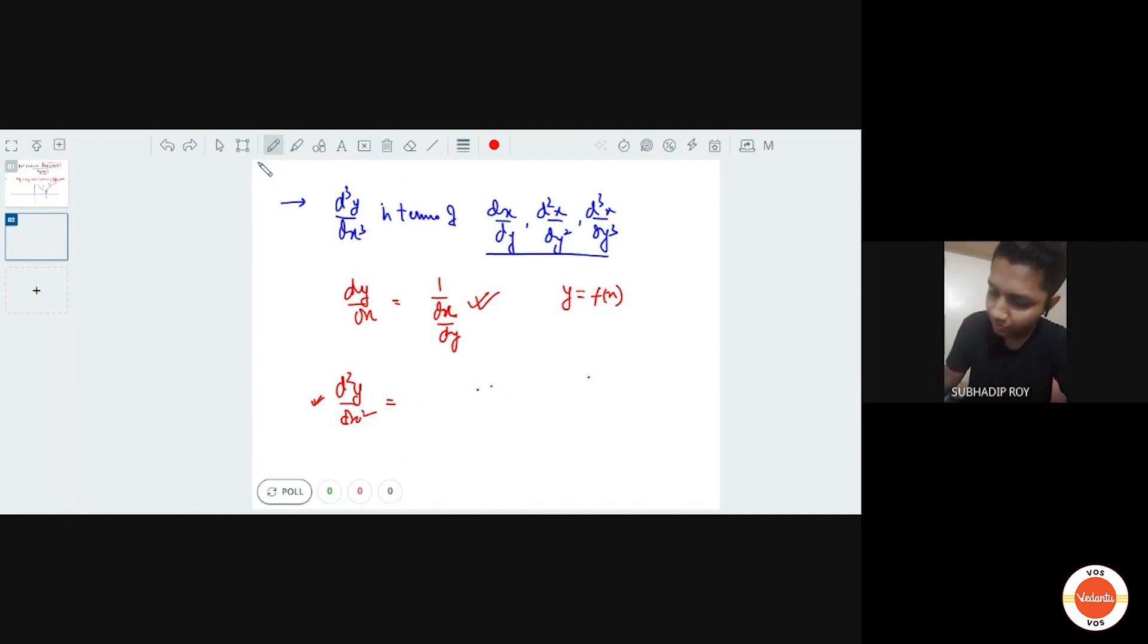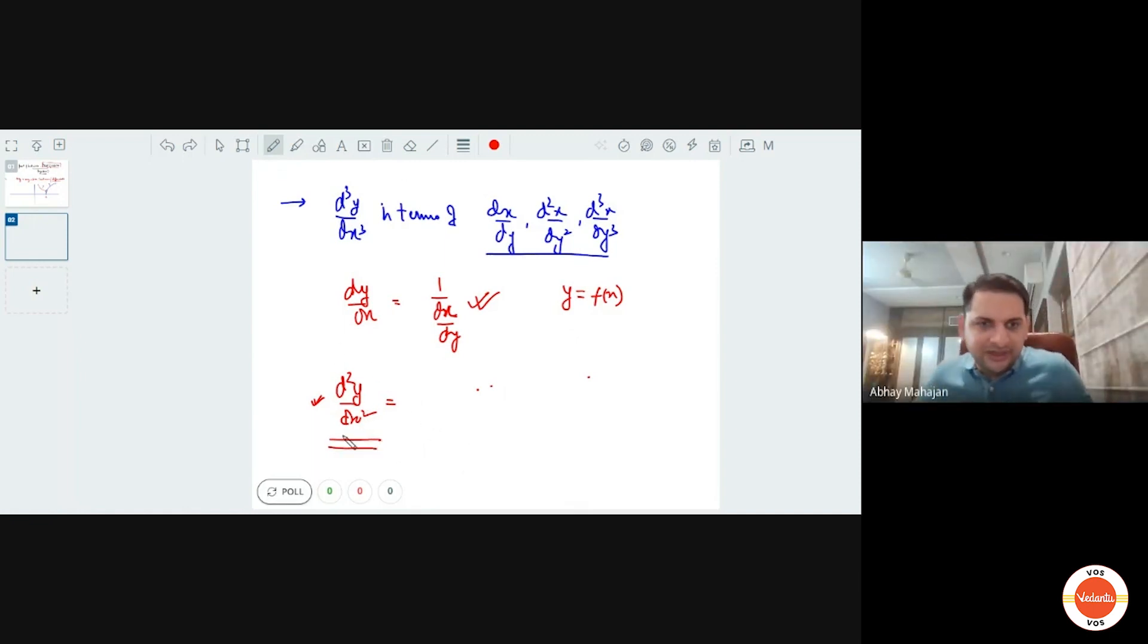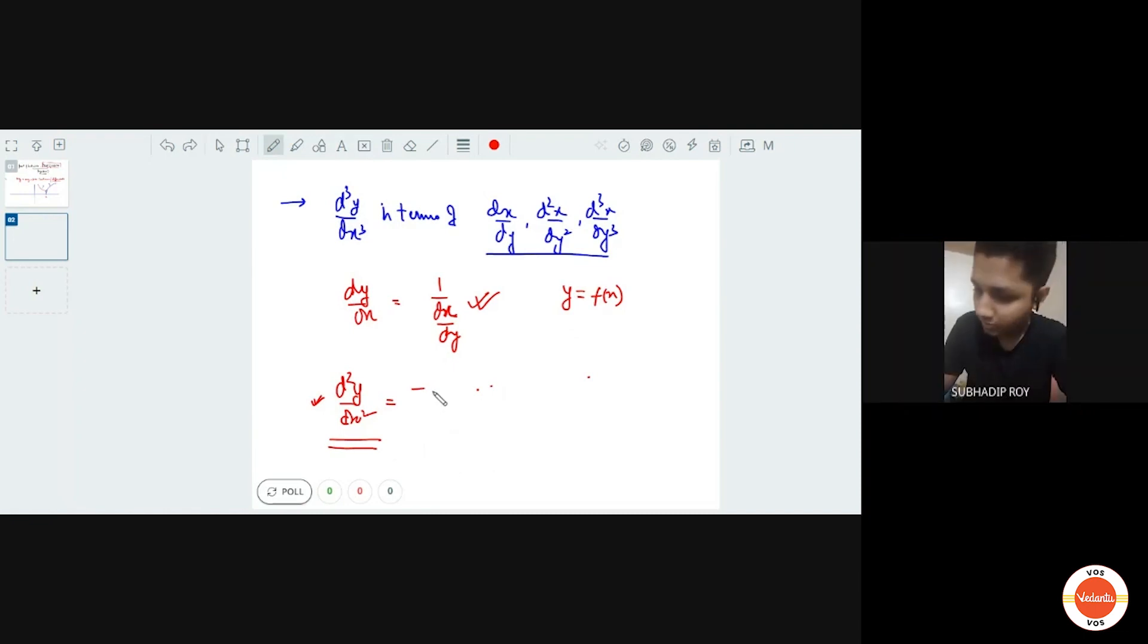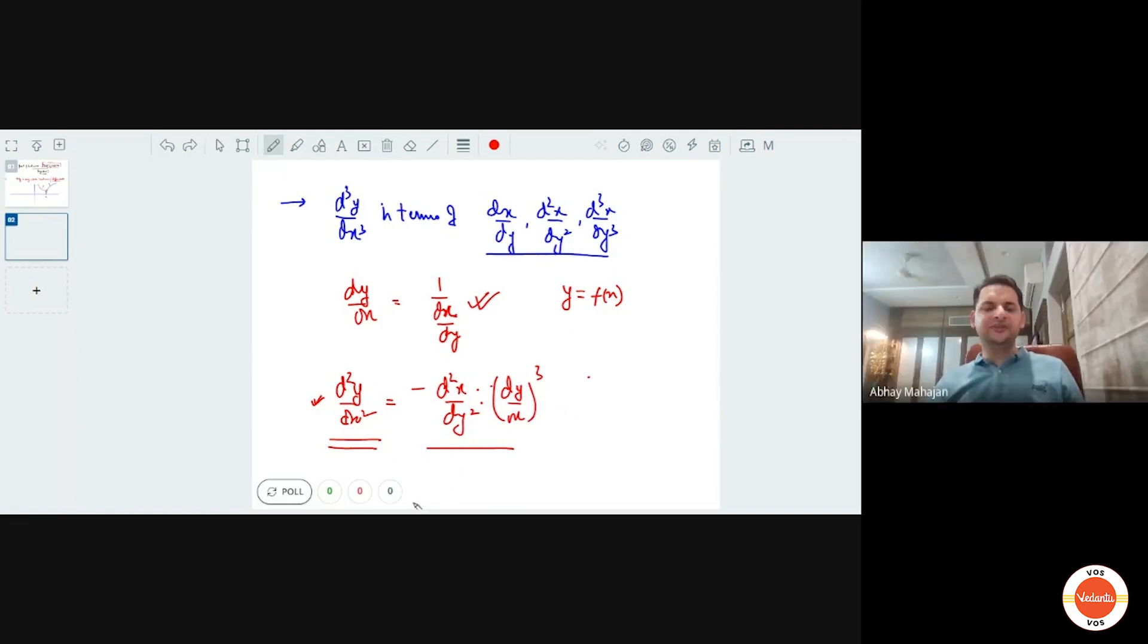So what would be this? Sir, it will be d square x by dy square into dy by dx whole cube equals to minus of d square y by dx square. No, I am talking about d2y by dx2. Okay sir, I got this as minus of d square x by dy square into dy by dx whole cube. Into? Into dy by dx whole cube. Okay. Perfect. And now you differentiate it again to find d3y by dx3. Perfect.